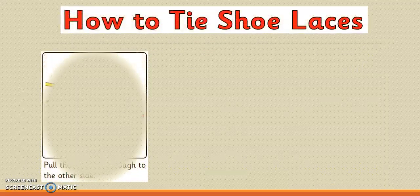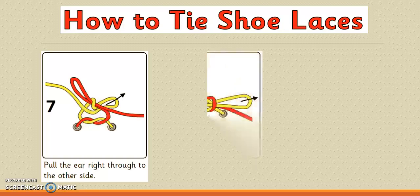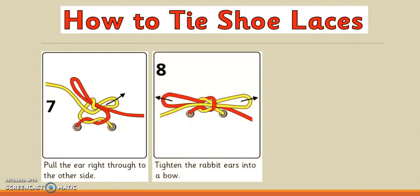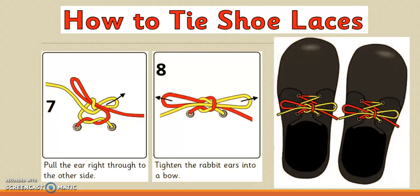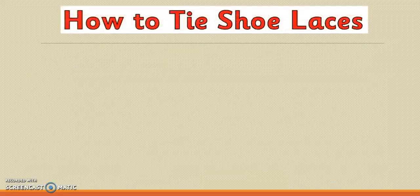Next: pull the ear through to the other side. Have a look at the picture again. Tighten the rabbit ears into a bow. And here we go — you should have been able to do that! If you think you might need another go, go back to instruction number one. If you've noticed, our instructions are all numbered one to eight, and they have a picture and the method telling you how to do that.